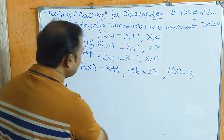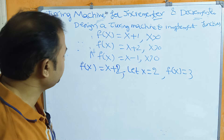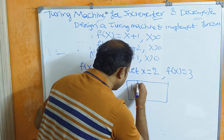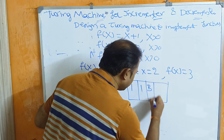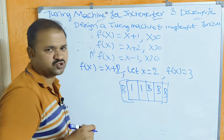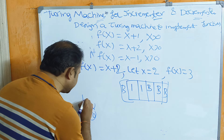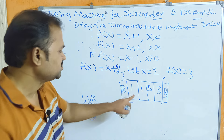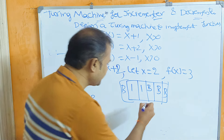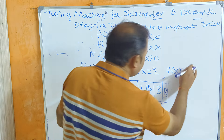The second function is f(x) = x+2. Now we have two increments. We have two ones as input. We are at state q0. In q0 we have blank symbols and we move through the states. In q0 with the blank symbol transitions we proceed through the tape.